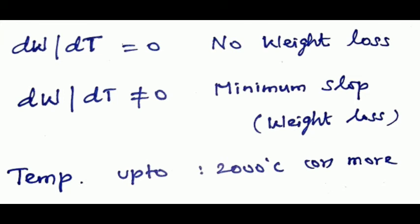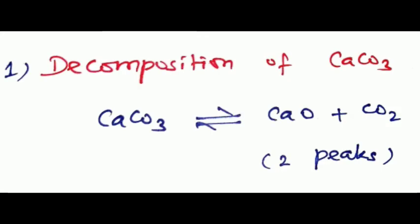Now we discuss some examples in TGA. First one is decomposition of calcium carbonate. This equation is very familiar. In vacuum conditions, decomposition is complete by 500 degrees Celsius, whereas in carbon dioxide atmosphere, decomposition will commence at above 900 degrees Celsius.